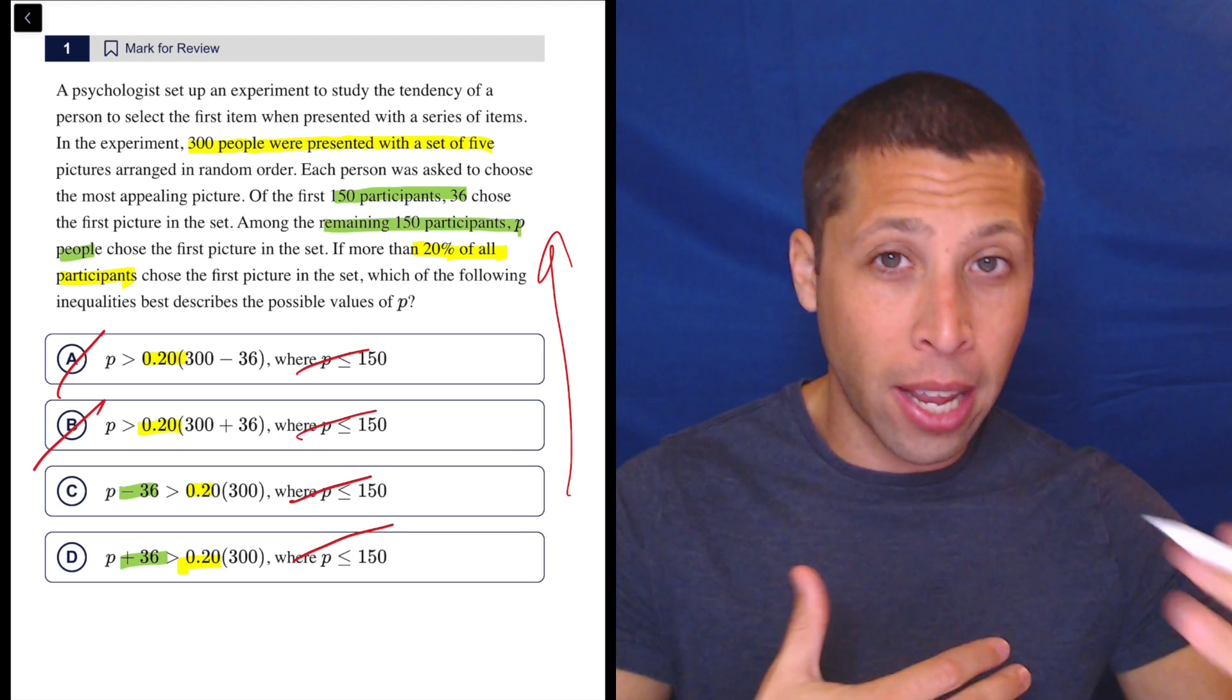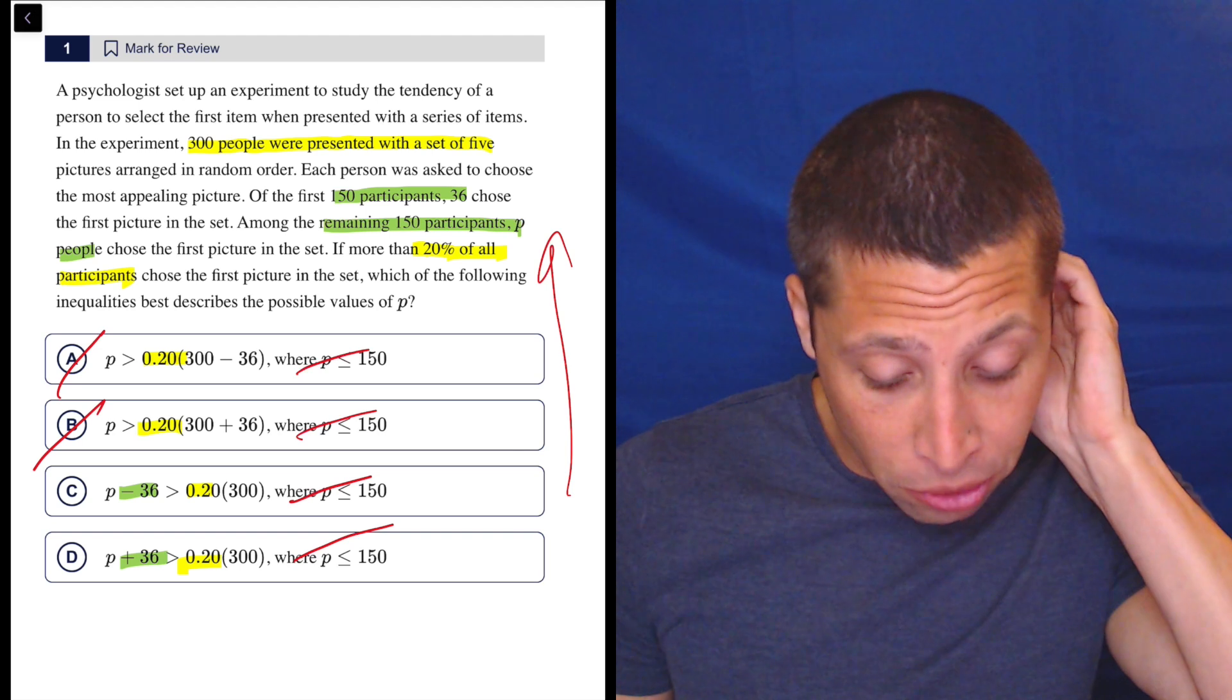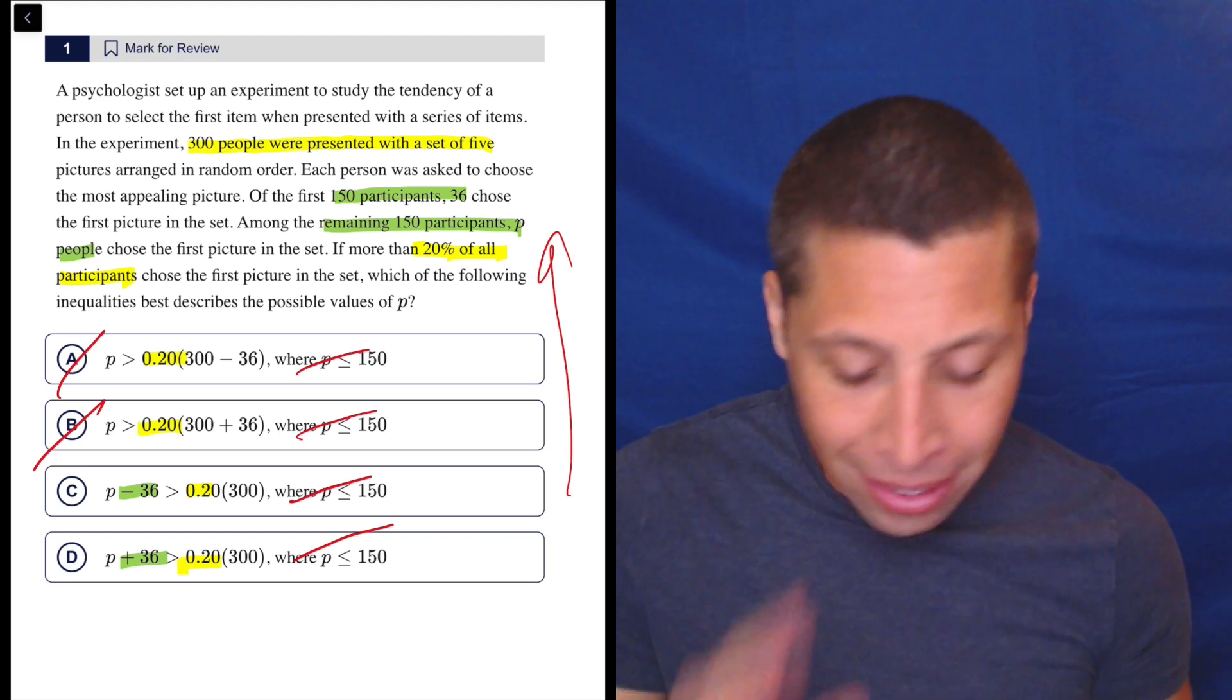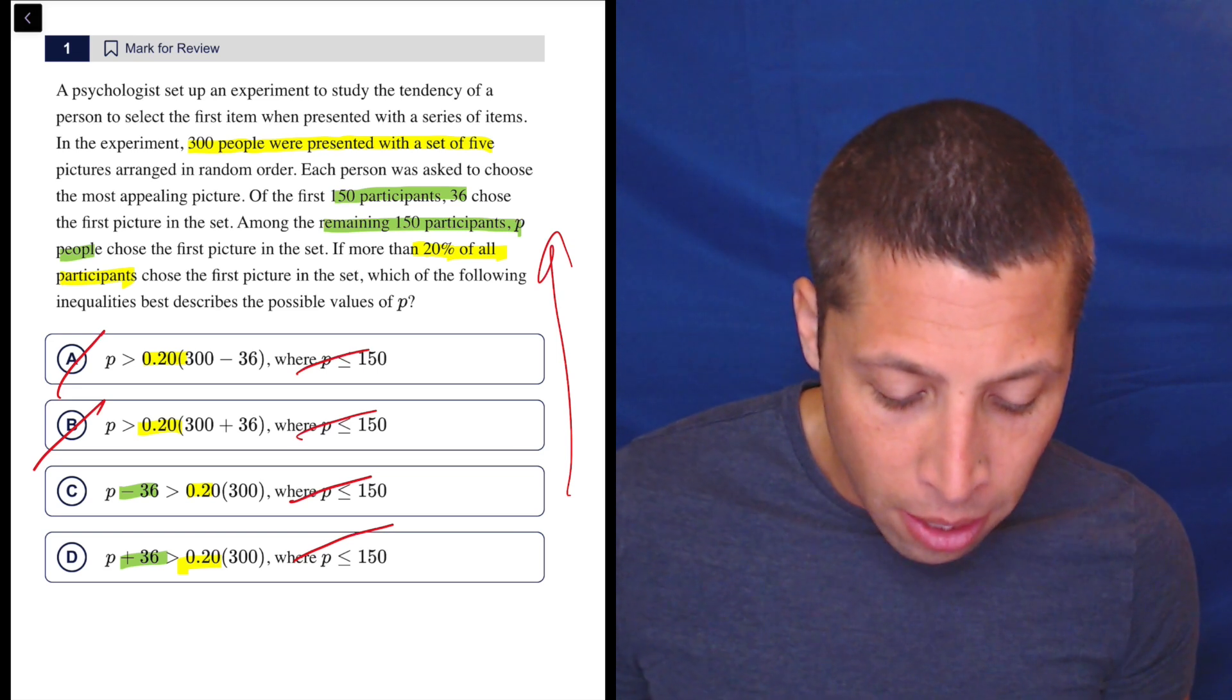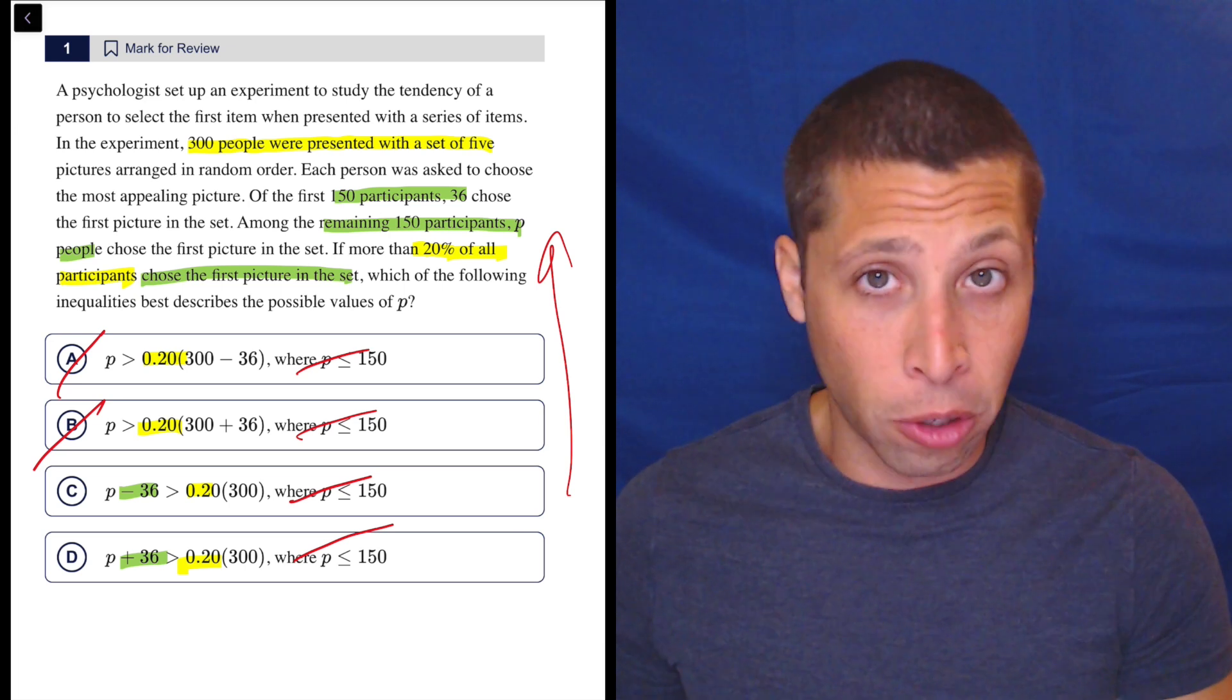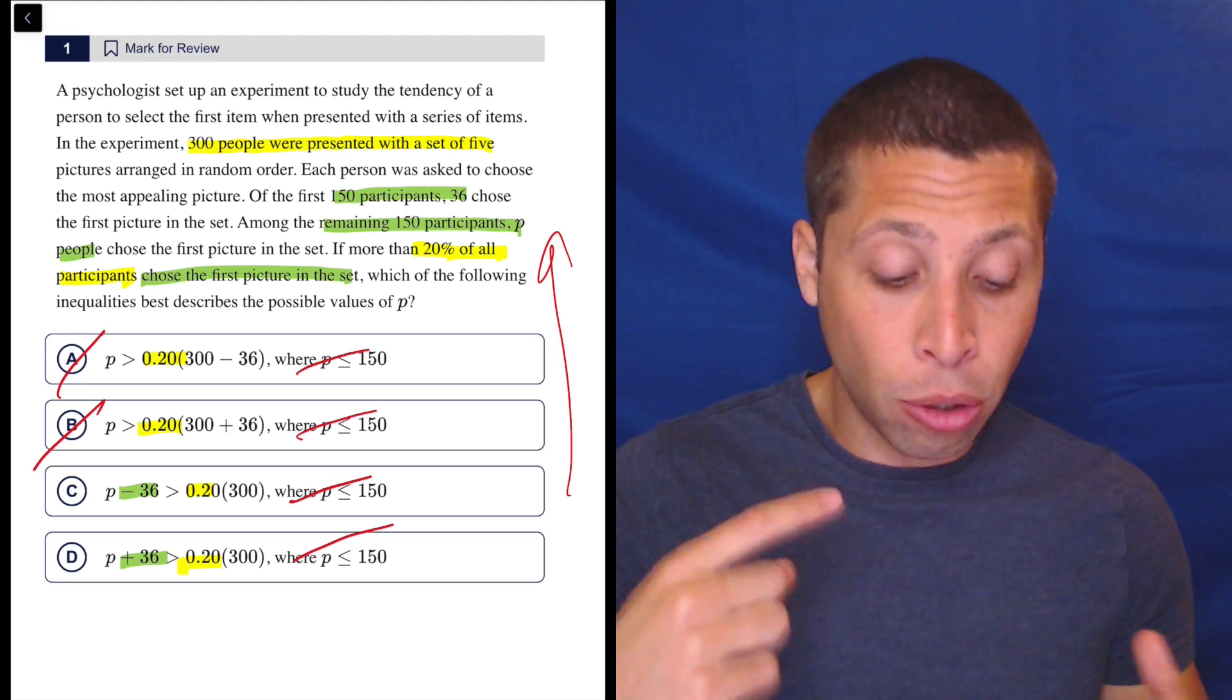So the 36 and the P are kind of like almost the same thing, right? If more than 20% of all participants chose the first picture in the set, which of the following inequalities best describes the possible values of P? So I'm not solving for P. I don't care. So they're saying we're comparing 20% of everyone, so 20% of 300, to the people who chose the first picture. So how many people chose the first picture? Well, in each group, we have a different amount.